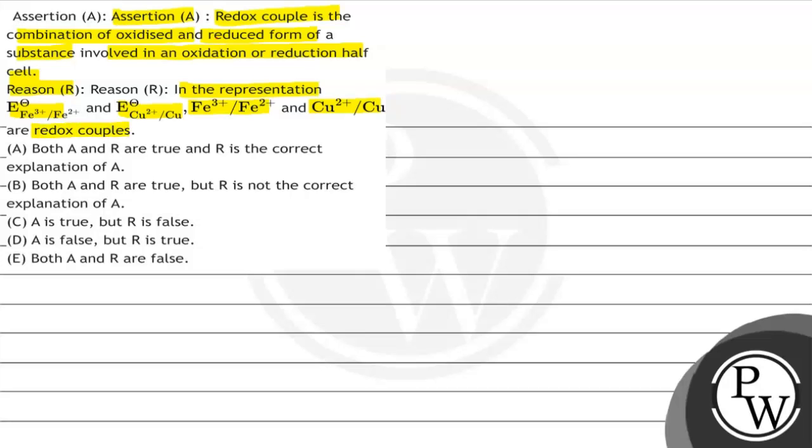Here we have a reason provided and an assertion provided. We have to find out whether both assertion and reason are true or reason is the correct explanation of assertion.